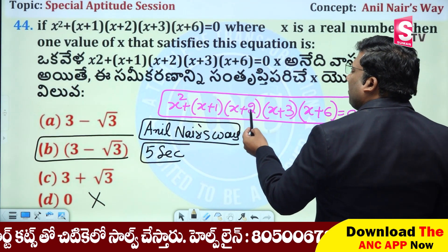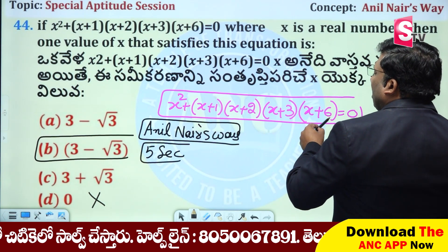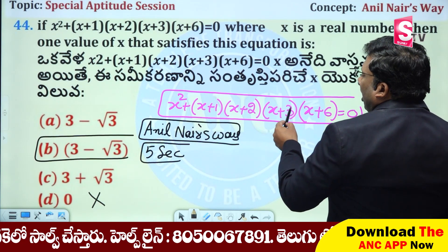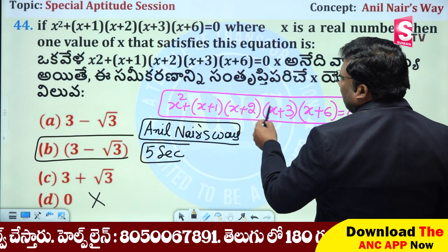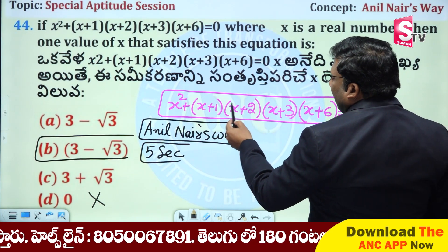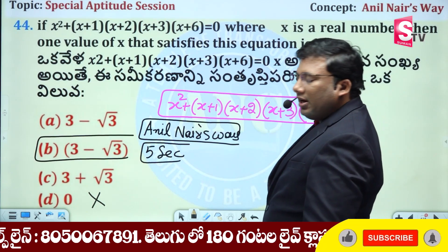Substituting x = 0: (0+1)(0+2)(0+3)(0+6) = 1 × 2 × 3 × 6 = 6 × 3 = 18, and 18 × 18 gives us values around 22 to 24. This is not equal to zero.